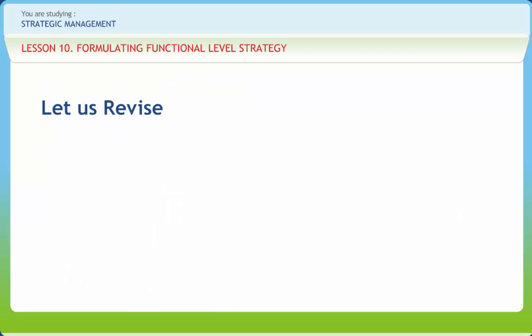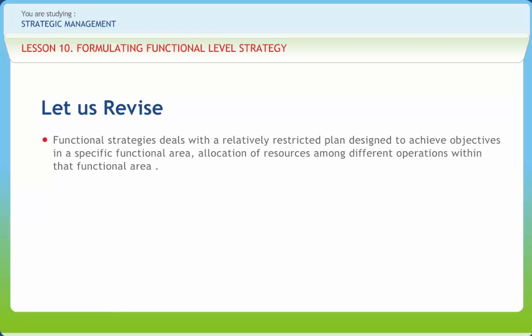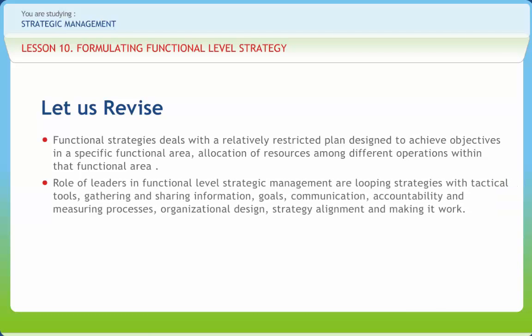Before we end, let us briefly revise what we have studied. Functional strategies deal with a relatively restricted plan designed to achieve objectives in a specific functional area, allocation of resources among different operations within that functional area, and coordination among different functional areas for optimal contribution to the achievement of business and corporate level objectives. The roles of leaders in functional level strategic management include: looping strategies with tactical tools, gathering and sharing information, goals, communication, accountability and measuring processes, organizational design, strategy alignment, and making it work.